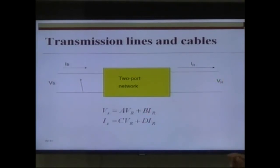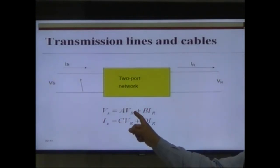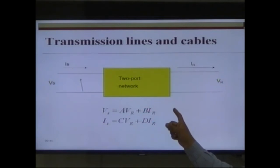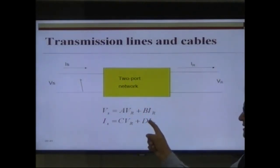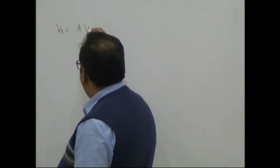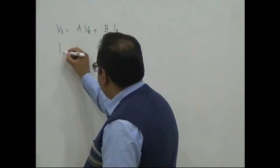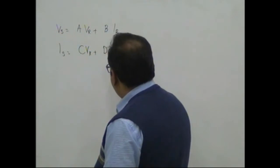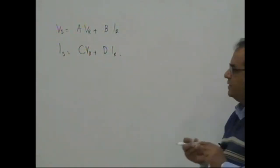From the theory of two-port networks, the voltage at the sending end is equal to A times Vr plus B times Ir, where A and B are parameters of this two-port network. The current at the sending end Is equals C times Vr plus D times Ir, where C and D are again parameters of the two-port network. We can represent this in matrix form: [Vs, Is] = [A, B; C, D] × [Vr, Ir].